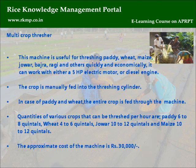Multi-crop thresher: This machine is useful for threshing paddy, wheat, maize, jowar, bajra, ragi, and other crops quickly and economically. It can work with either a 5 HP electric motor or diesel engine. The crop is manually fed into the threshing cylinder; in the case of paddy and wheat, the entire crop is fed through the machine. Quantities that can be threshed per hour: paddy 6-8 quintals, wheat 4-6 quintals, jowar 10-12 quintals, and maize 10-12 quintals. The approximate cost of the machine is Rs. 30,000.